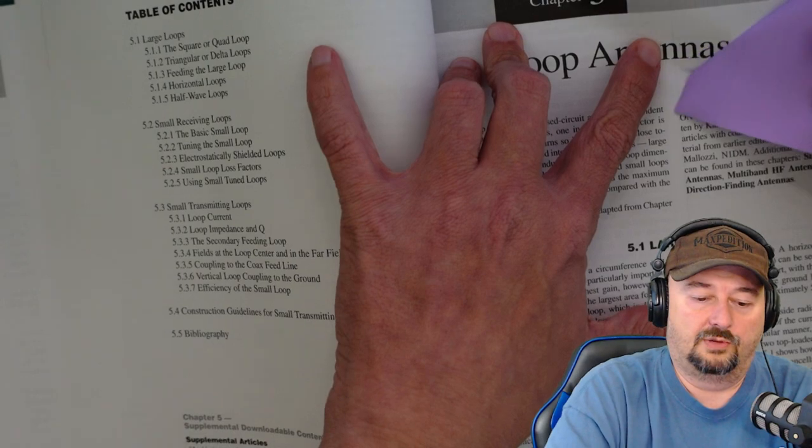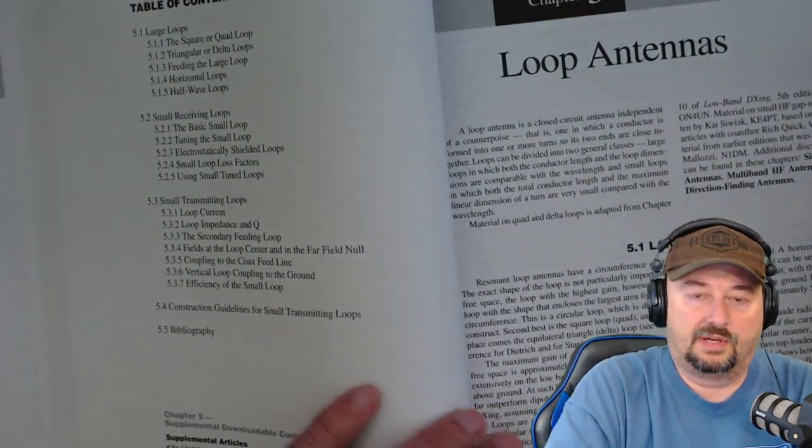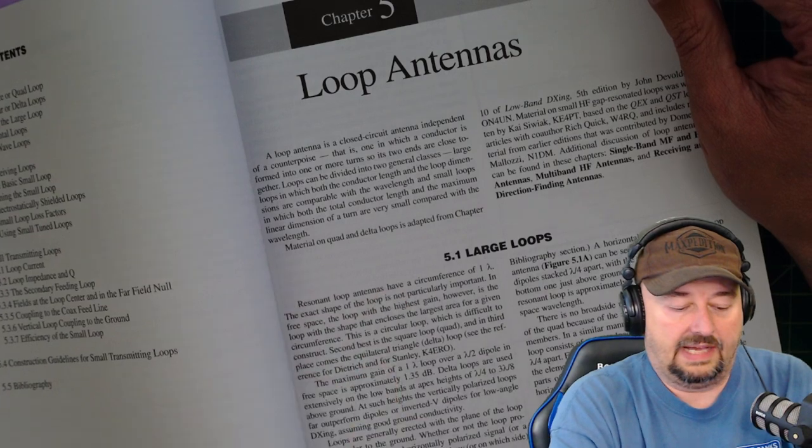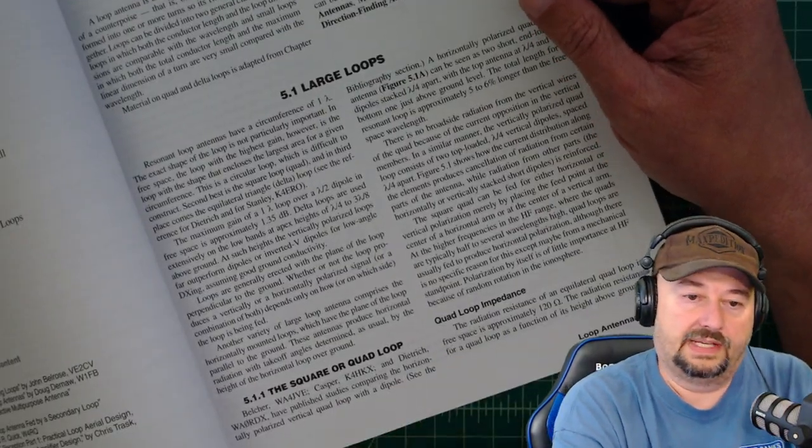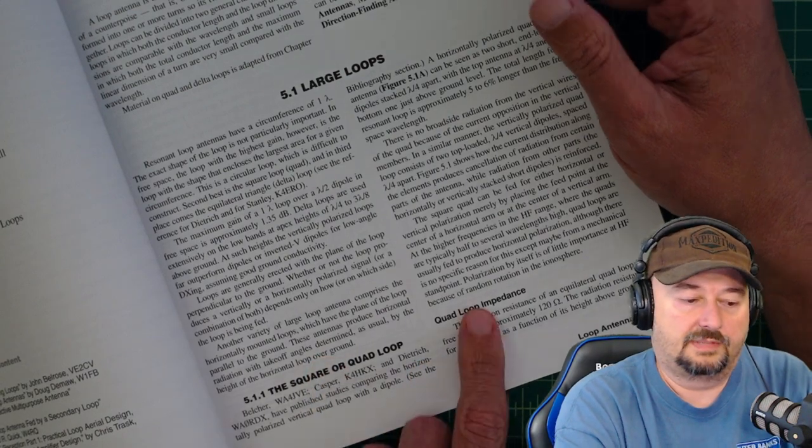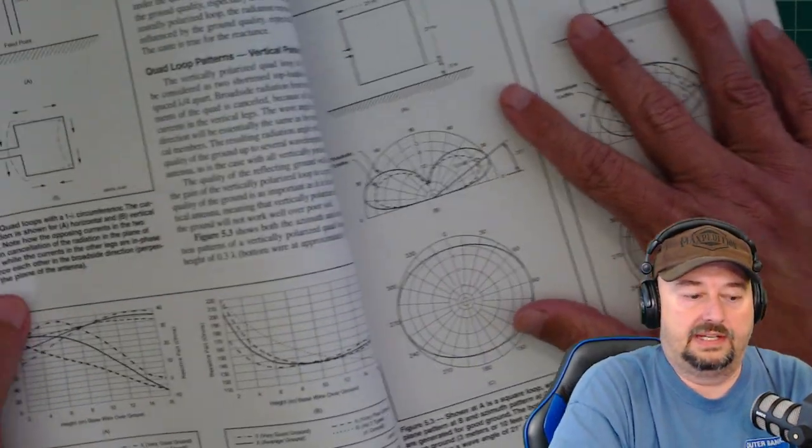Here's just a section on loop antennas. Not that I want to spend a bunch of time talking about loop antennas, but I wanted to show how it goes over different types of loop antennas. Like, you have your square, your quad loops. It talks about impedance and any kind of matching networks that you might want to have.